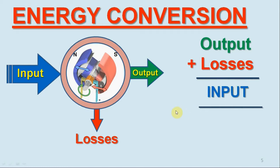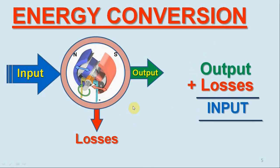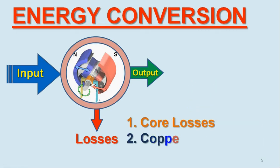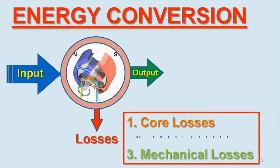Though different losses occur in different ways, all of them cause heating. The heat generated by these losses increases the temperature inside the DC machine, which affects not only the life of the insulation but also the performance of the DC machine. These losses include mainly core losses, copper losses, and mechanical losses. So before we define the efficiency of the DC machine, let us first understand these losses one by one.